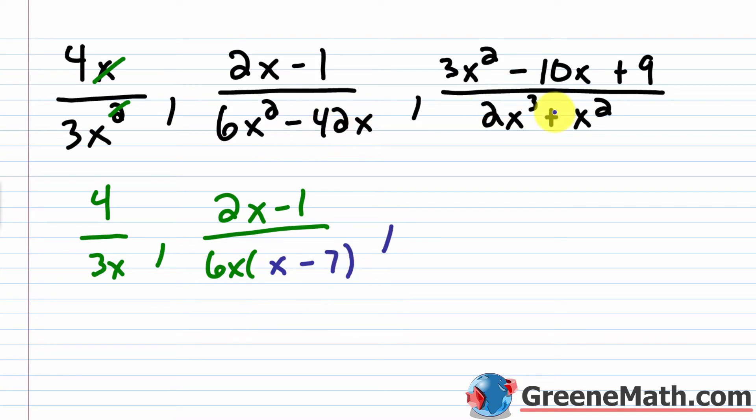So then here, I would say three x squared minus 10 x plus nine can't really factor that. So let's just leave that as three x squared minus 10 x plus nine. And this is over, you have this guy right here, which I can factor. I could pull out an x squared. So that would give me a two x plus a one here. So nothing really to cancel anywhere else other than this.